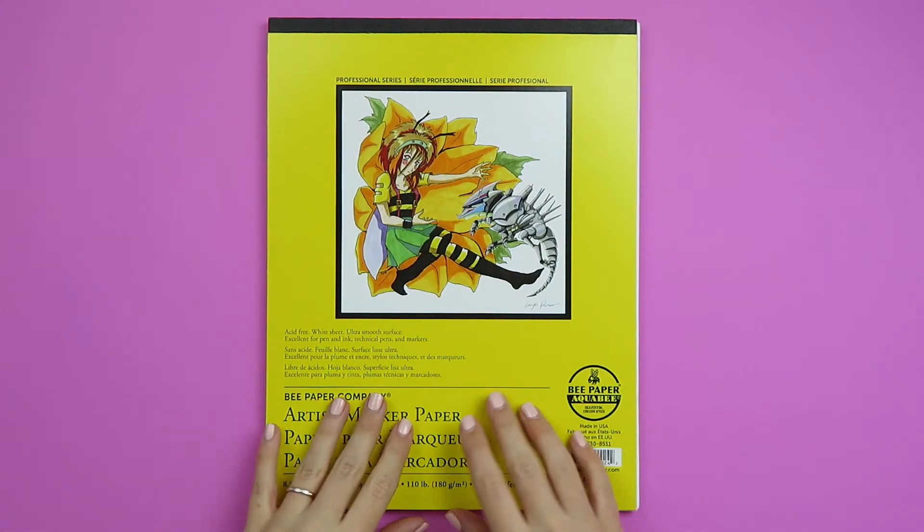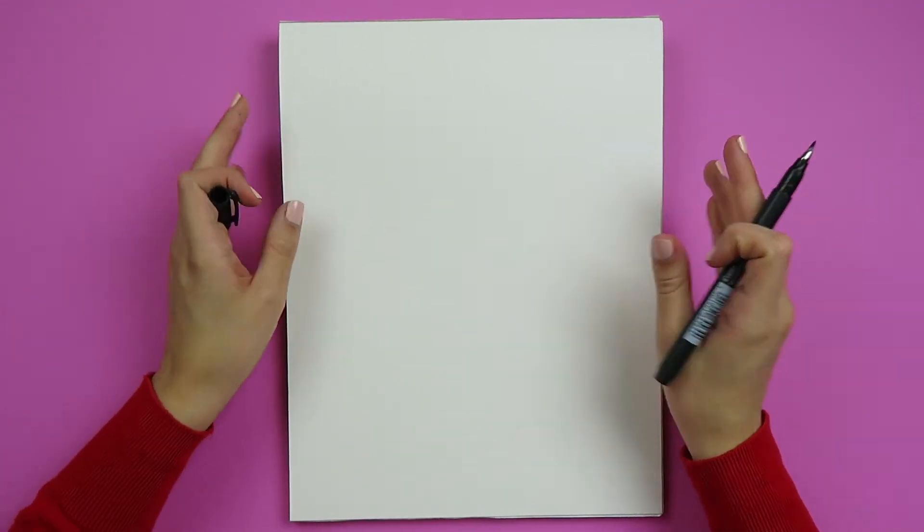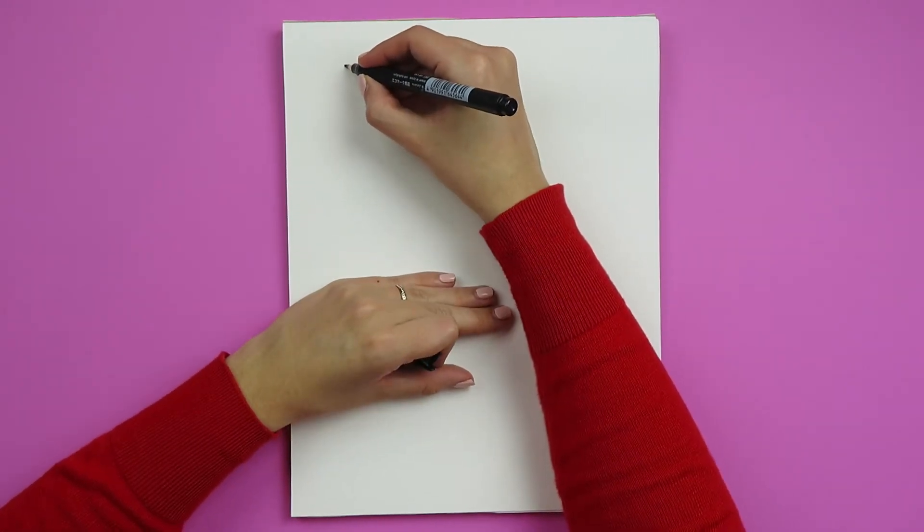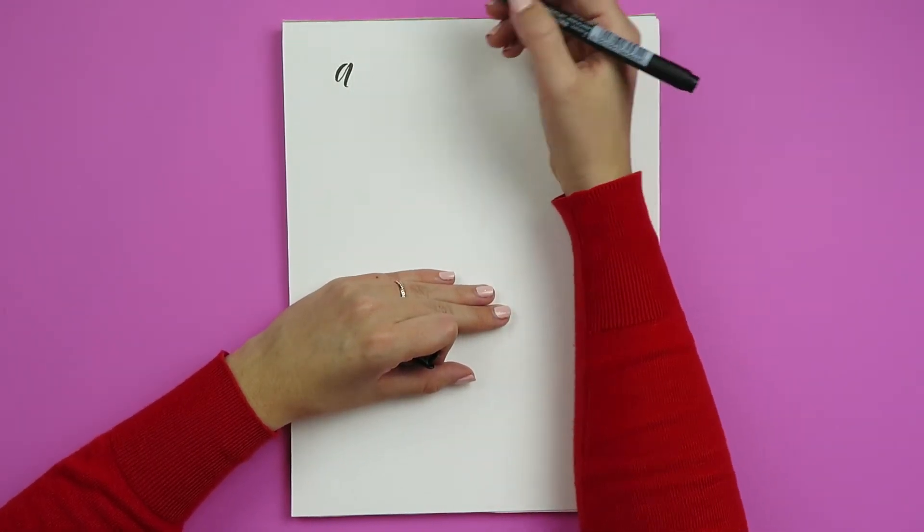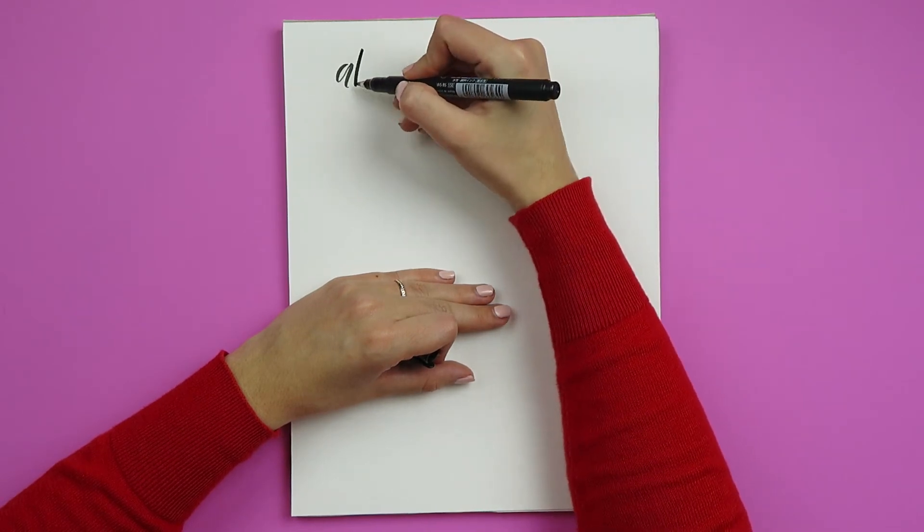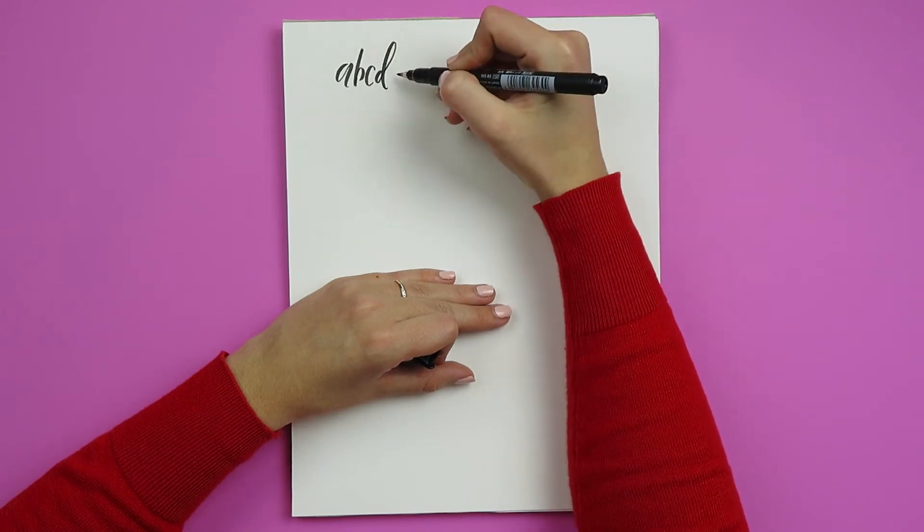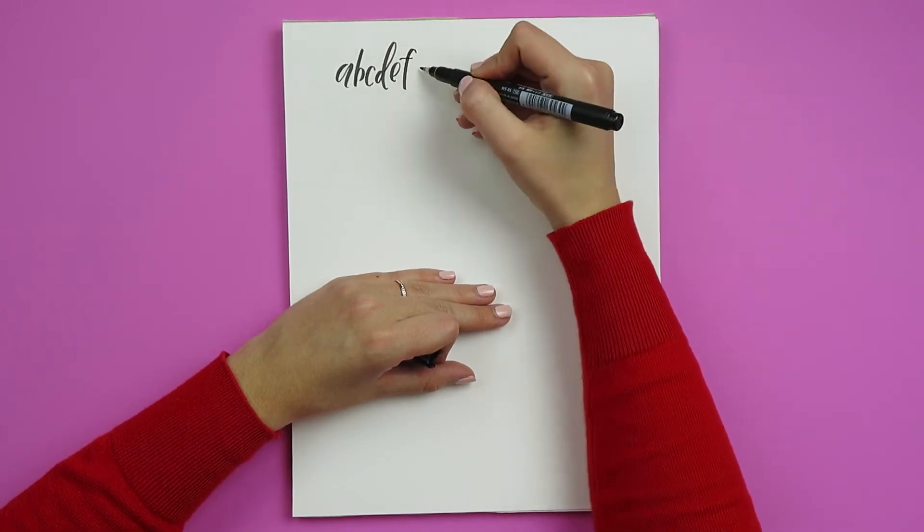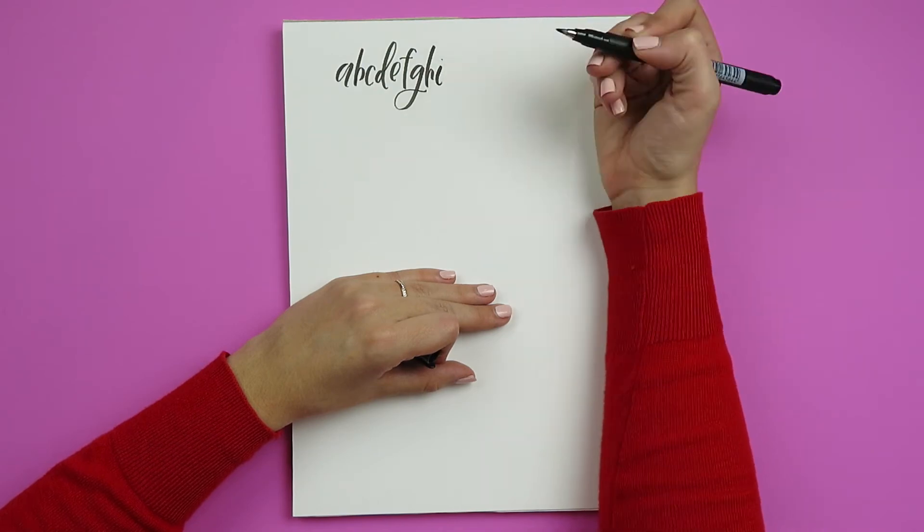Lastly, I included some artist marker paper. This is a little more expensive, but it's super smooth. It works perfectly for markers or for brush pens and it doesn't come loose leaf. So if you're a little more into having things all in one spot and keeping things together and organized, then this would be for you. But once again, this is a more expensive option and I've got everything linked below in the description box and in the blog post that goes along with this video.